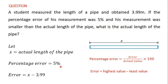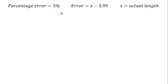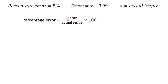Now we have the percentage error as 5 percent, the error as x minus 3.99, so we can find the actual value which is x. We know that percentage error equals error divided by the actual value times 100. So we substitute this information into the formula: the percentage error is 5, the error is x minus 3.99, and the actual length is x, then times 100.